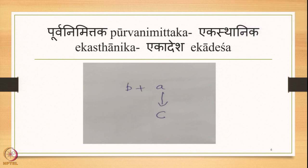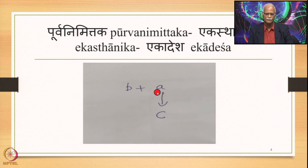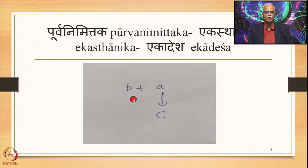Purvanimittaka Ekasthanika Ekadesha is explained diagrammatically on this slide, where we have B plus A in close proximity in the Samhita mode, and immediately before A there is B. So B is the Purvanimittaka, A is Para, and in the environment of this Purvanimittaka B, A is substituted by C. A is the Sthani, C is the Aadesha, B is the Purvanimittaka. So B plus A is the input and B plus C is the output.